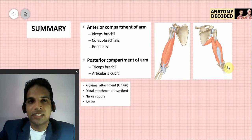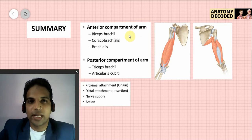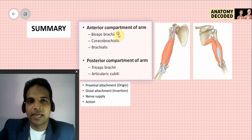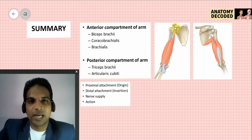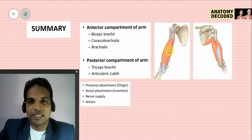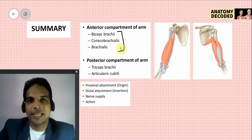Let's summarize what we have covered in this session. In the anterior compartment of the arm there were three muscles: biceps brachii, coracobrachialis, and brachialis. Biceps brachii — proximal attachment is from two heads: the short head arises from the coracoid process, and the long head arises from the supraglenoid tubercle. Distal attachment is on the radial tuberosity as well as the deep fascia of the forearm. Nerve supply is the musculocutaneous nerve for all three anterior compartment muscles, arising from the lateral cord of the brachial plexus, root value C5, C6, and C7.